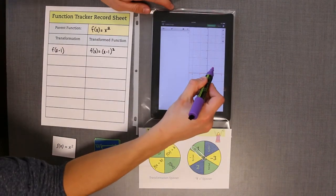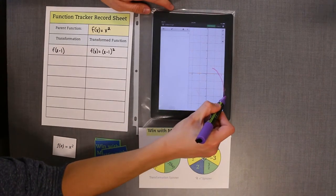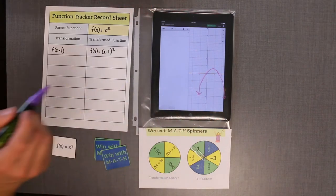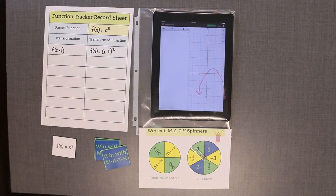Draw the transformed function on the screen with the electronic graphing tool with a dry erase, wet erase, or chalk marker depending on the surface of the electronic graphing tool. Explain your drawing while you're drawing or once you're done with it.